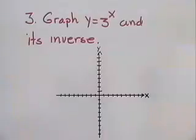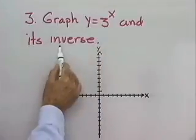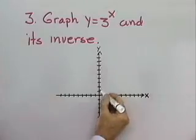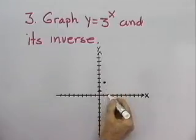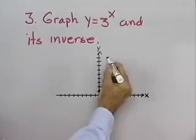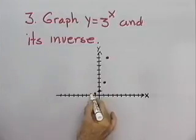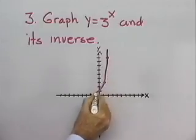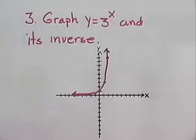Let's look at one more problem. We want to graph the exponential function y equal 3 to the x and its inverse. When x is 0, y will be 1. When x is 1, y will be 3. When x is 2, y will be 9. When x is negative 1, y will be 1 third. When x is negative 2, y will be 1 ninth. So I can sketch the graph of y equal 3 to the x quickly.